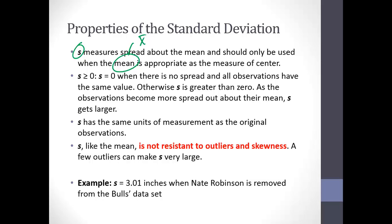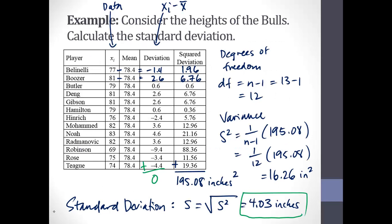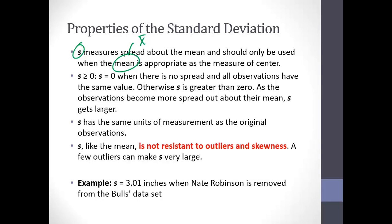It is possible for the standard deviation to equal zero — that happens when all observations have the same value, which is a trivial case that rarely happens. The standard deviation has the same units as the original measurements, so in our example it's in inches, matching our original data. And like the mean, it's not resistant to outliers and skewness — every observation is used to calculate it, unlike the median where extreme values may not have as much effect.